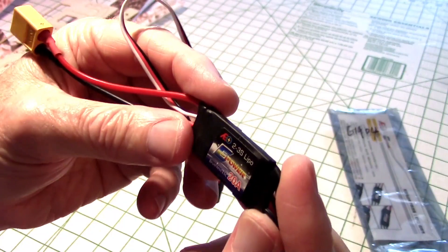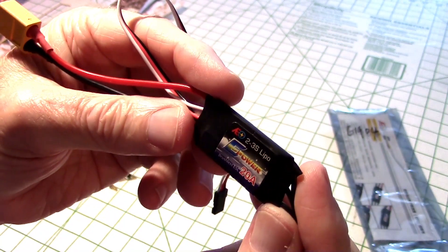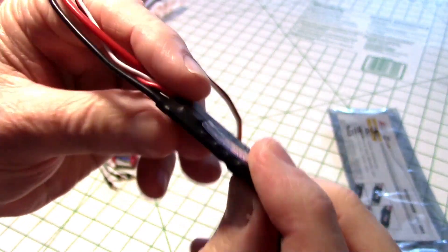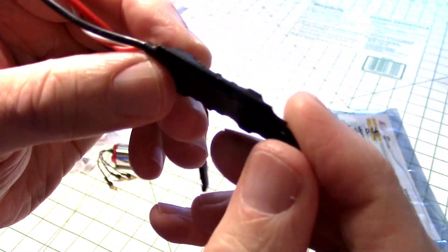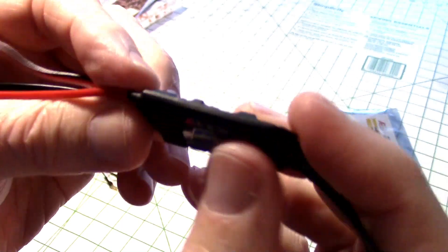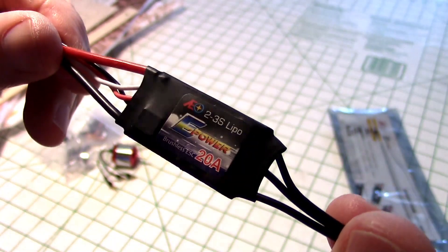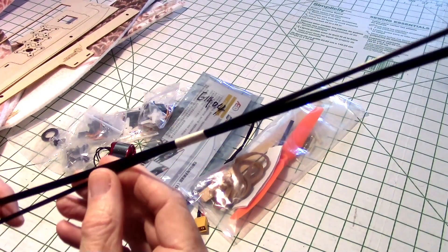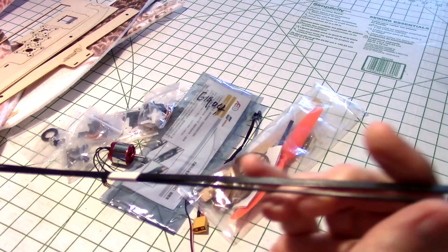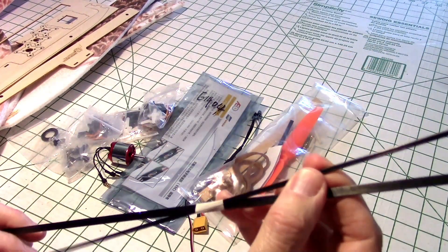All right, let's take a look at the ESC. Says 2 to 3s lipo, 20 amp. Doesn't look like it has any heat sink on there at all, it's just the plain board and heat trunk. I might replace this ESC with maybe a 30 amp with the heat sink on it.